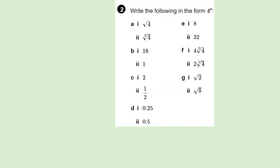Another useful skill is to take a value and write it as a power of a particular number. All of these values can be written as a power of 4, in the form 4 to the power of p, where p is a value to be found. Have a look at these questions, try to do them first, then start the video again and the solutions will appear along with an explanation.